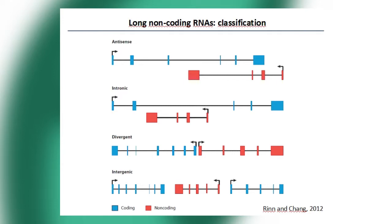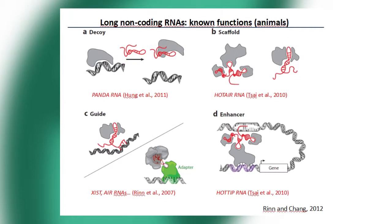Most advances in understanding Non-Coding RNA roles have occurred in mammals or animals in general. For example, PANDA RNA is in charge of taking a chromatin-binding protein — in this case a transcription factor — away from the chromatin, to prevent the transcription factor from controlling its target gene. A very well-known Non-Coding RNA is HOTEGA, which acts as a scaffold to conform a protein complex. These proteins don't interact directly with each other, but do so through a well-structured Non-Coding RNA.